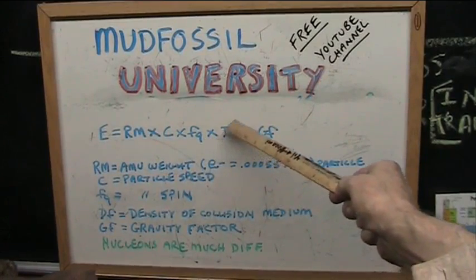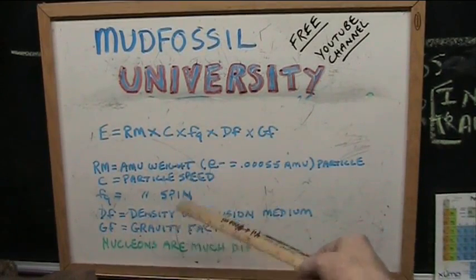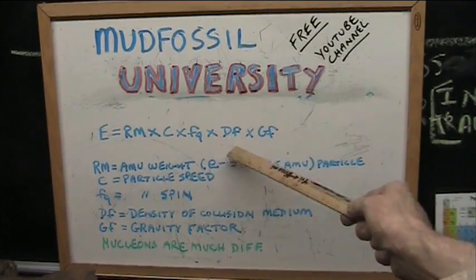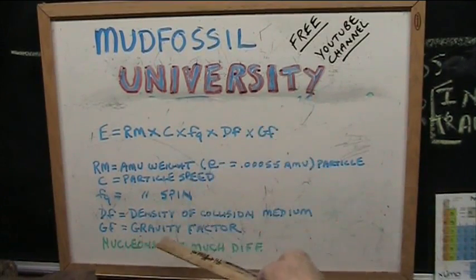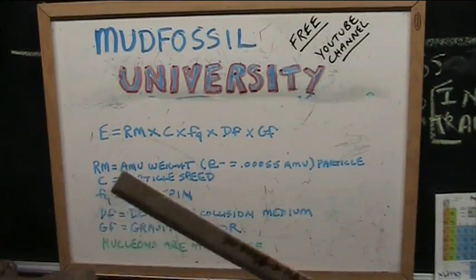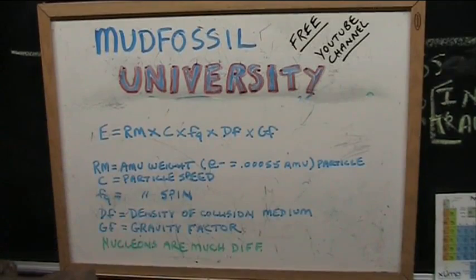times df, which is the density factor—in other words, what is it colliding into, what's the density—times gf, which is the gravity factor. What gravity are we in? Are we in positive gravity or outer space? These are the things that do it.